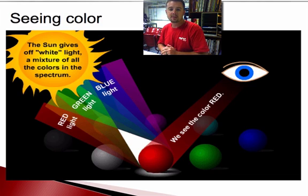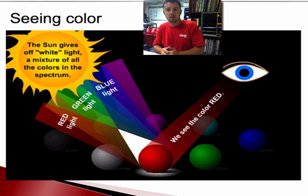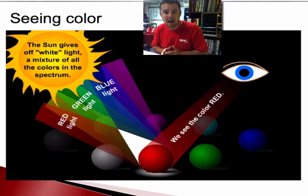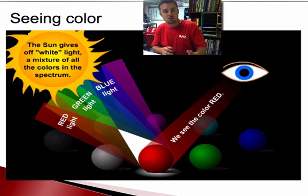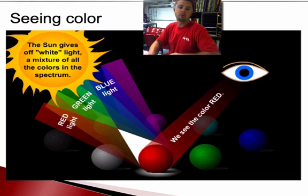A great example is being outside on a hot, sunny day wearing a white t-shirt and then changing into a black t-shirt. The color black absorbs all colors of light, so wearing a black t-shirt will make you considerably hotter than wearing a white one. The color white reflects all colors in the visible spectrum.